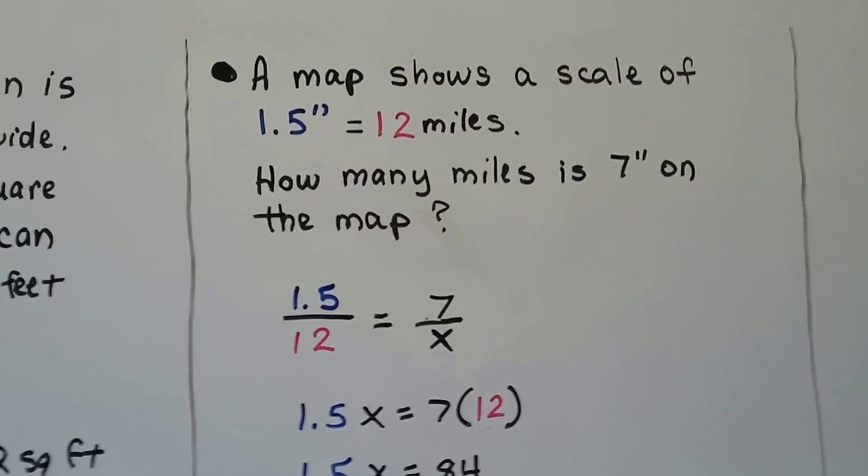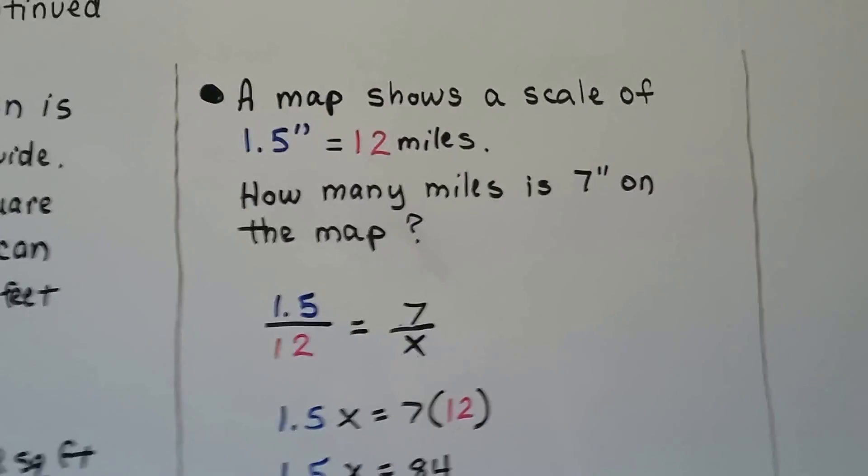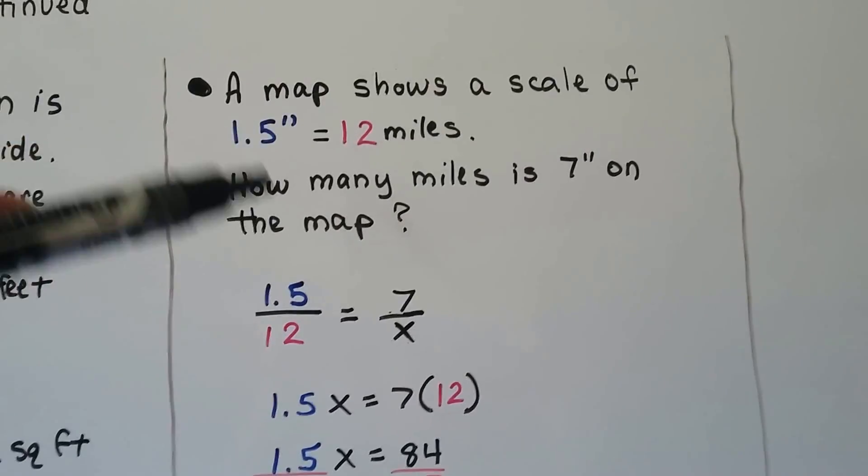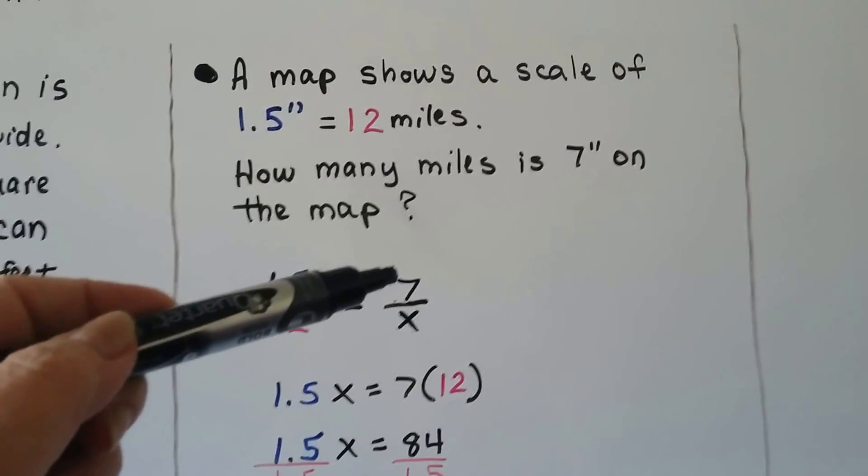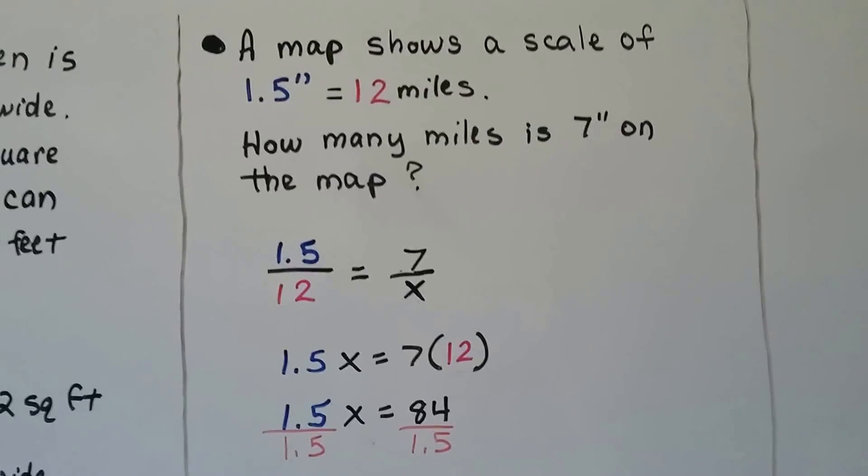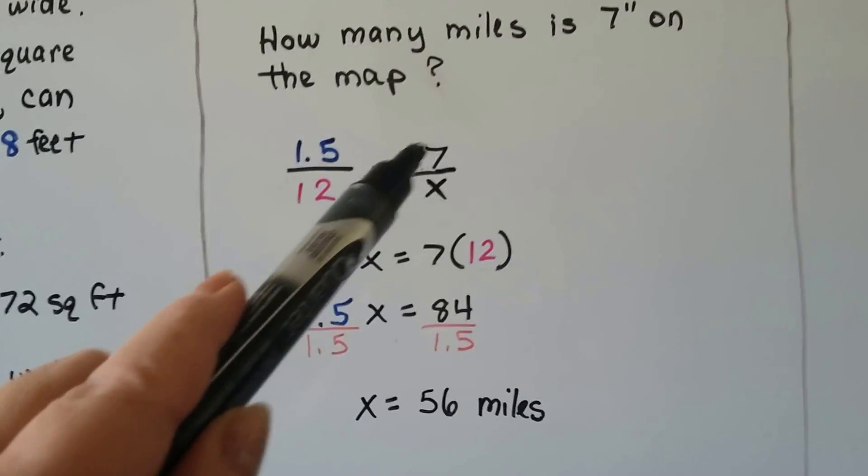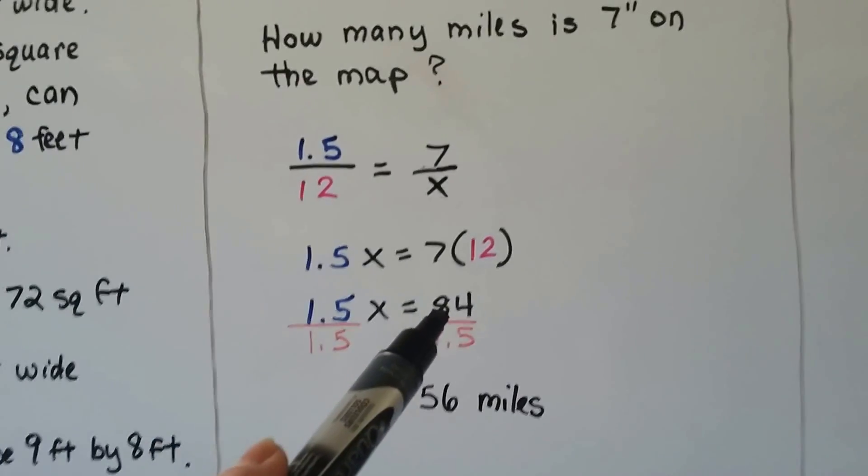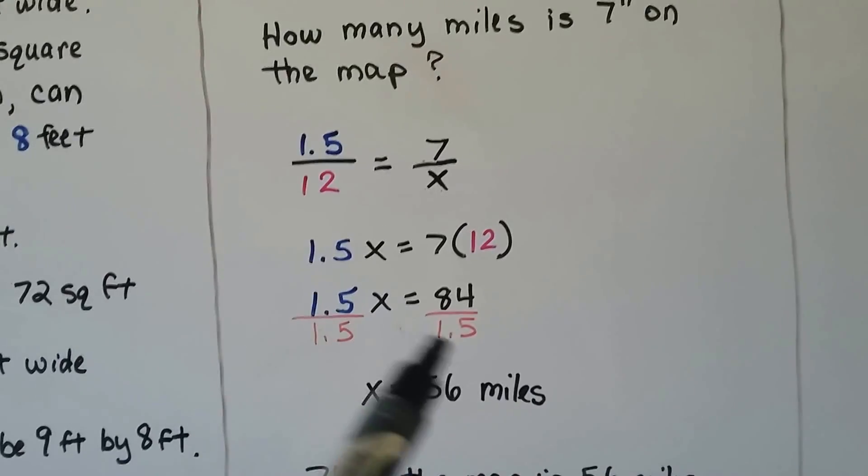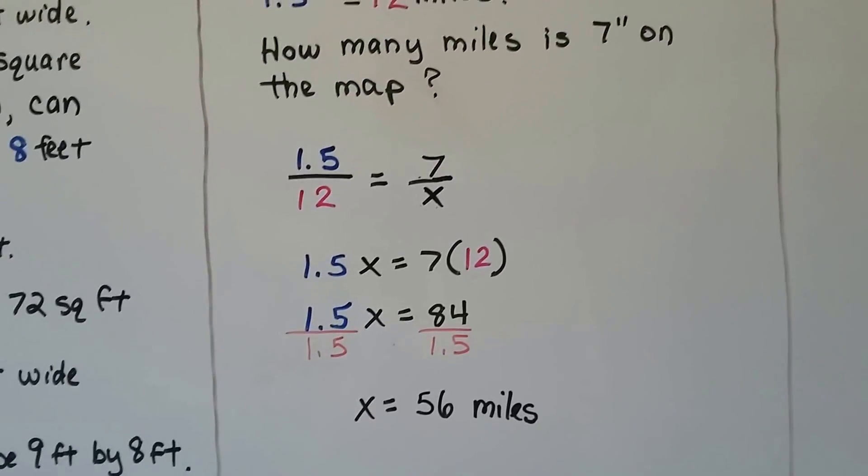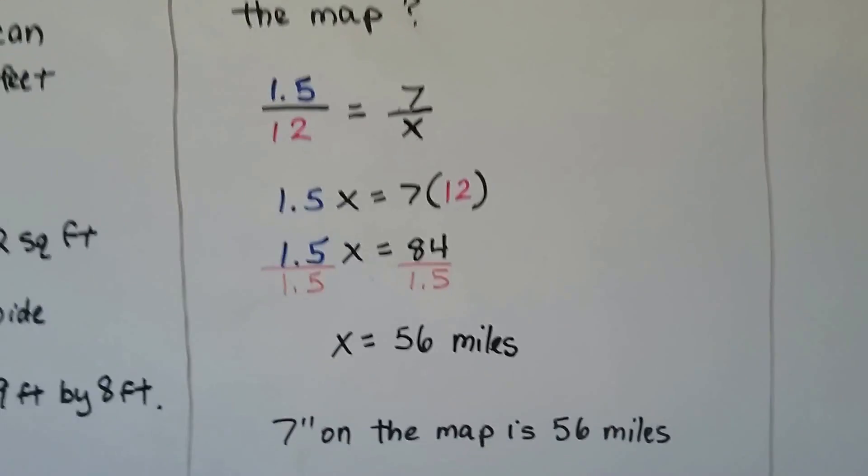A map shows a scale of one point five inches equals twelve miles. How many miles is seven inches on the map? So, here's our fraction, one point five over twelve. And, it's going to equal the inches on the map, the seven, over what the actual one is. We cross multiply, one point five x equals seven times twelve, which is eighty-four. We divide both sides by that coefficient, one point five. And, we get x is equal to fifty-six miles. So, we know the seven inches is fifty-six miles on the map.